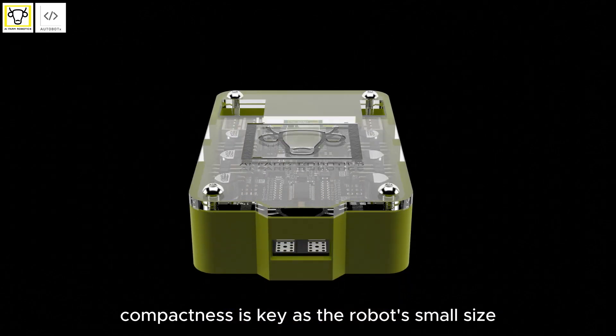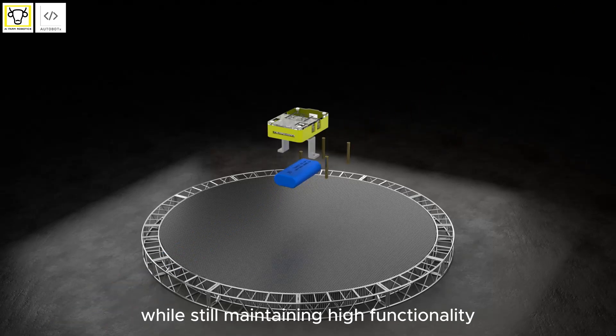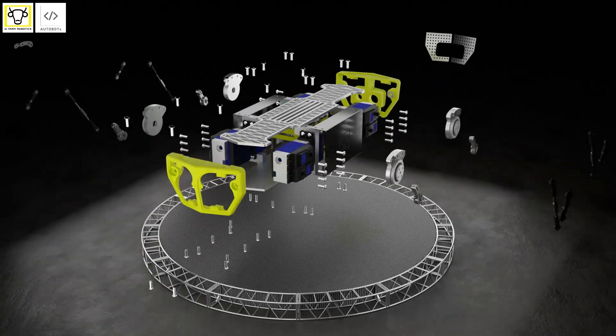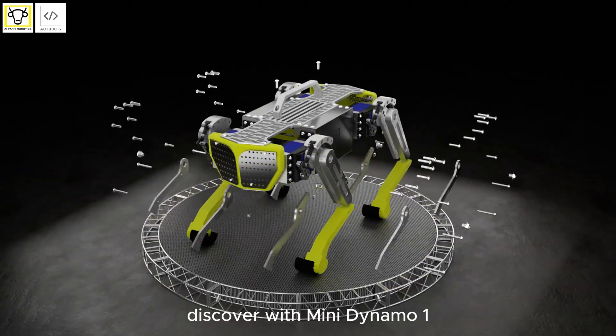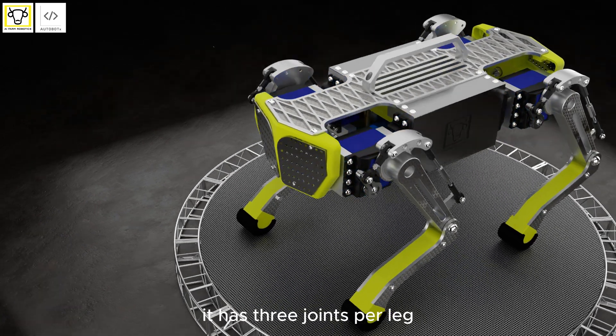Compactness is key, as the robot's small size demands that the PCB is as condensed as possible while still maintaining high functionality. Each leg is equipped with high-performance servo motors. It has three joints per leg.